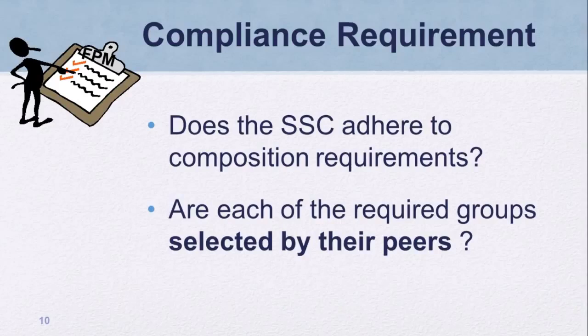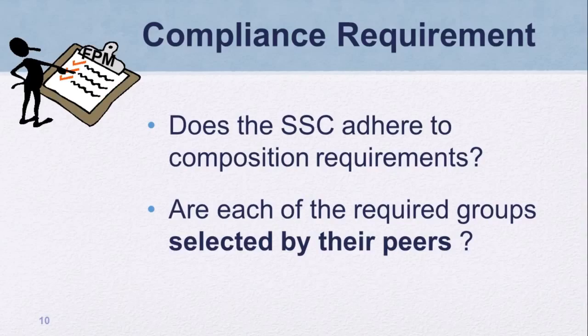Compliance with requirements for SSCs is monitored during FPM visits or online reviews which occur on a two-year cycle. Why is SSC composition a big area of noncompliance? Some common misconceptions, such as reserving spots to make a representative council, result in noncompliance during federal program monitoring. Although the intent to reserve spots may be good, no seats are reserved except for the principal. Schools are frequently cited because SSC membership does not adhere to composition requirements and/or the SSC does not follow a selection process where members are selected by their peers.